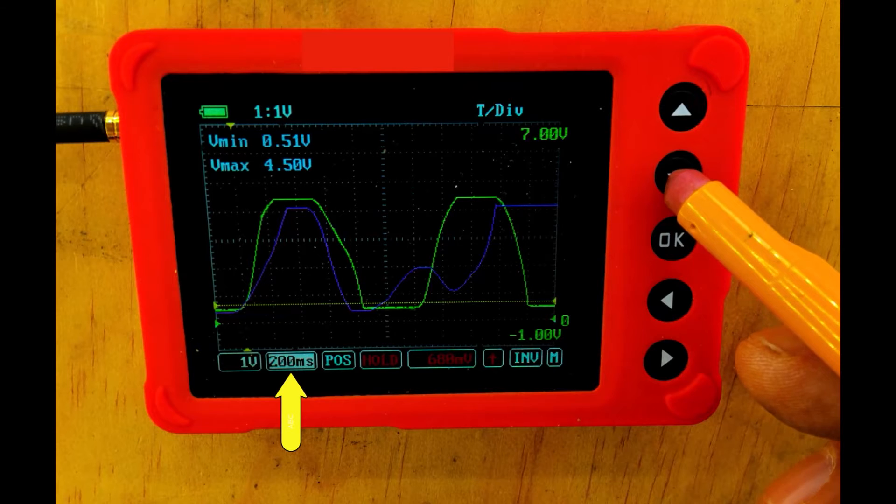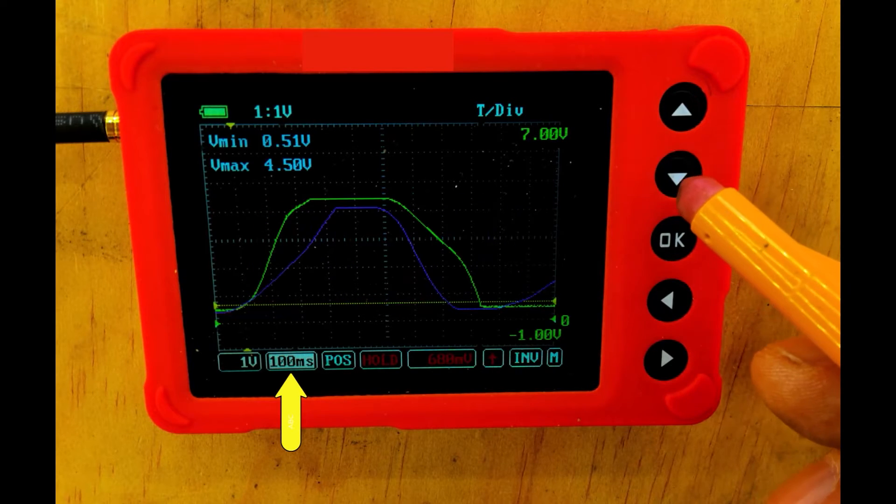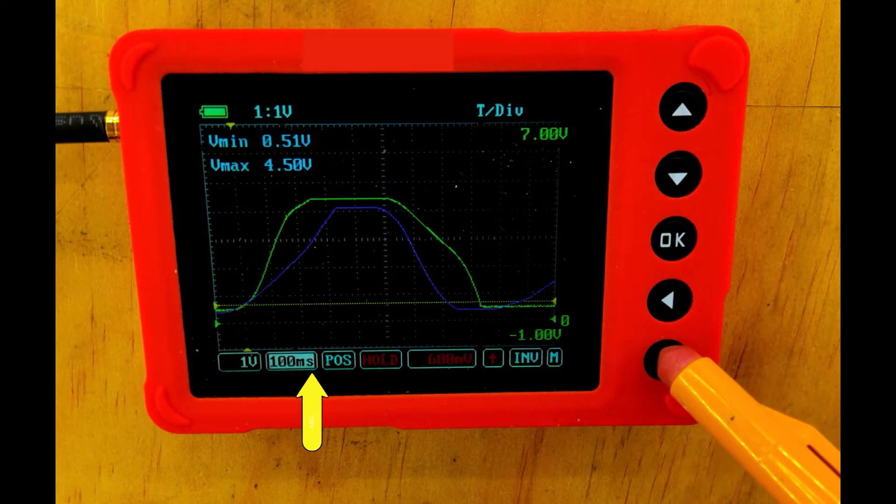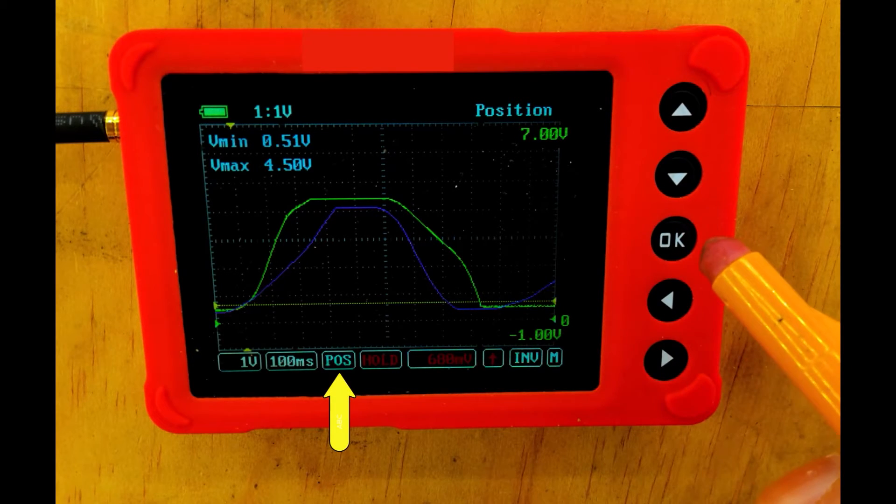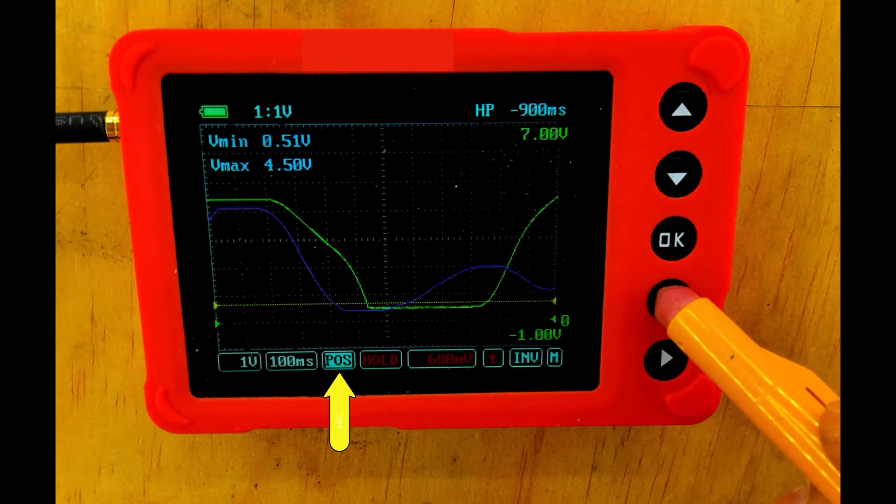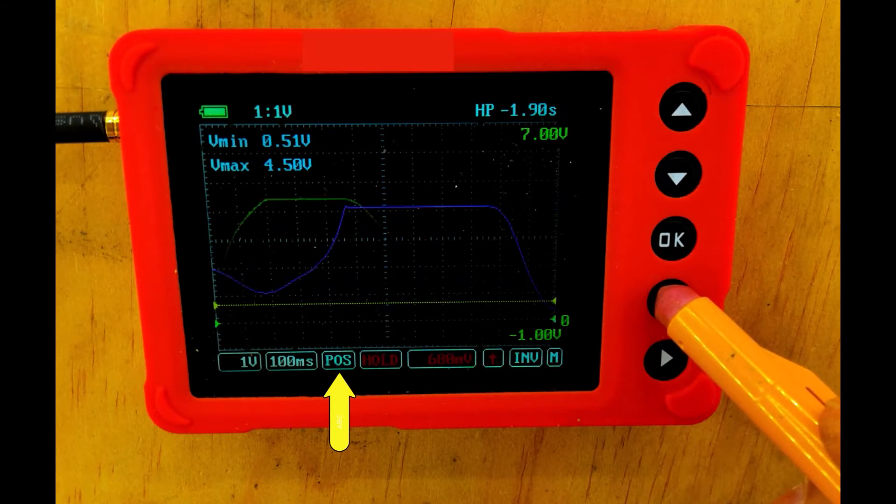If I want to scroll through that and lower that time, but I want to really scroll through each one of these cycles, I'm going to navigate over to my position. Hit OK once till it's flashing, and now I can scroll through each one of these patterns for my comparison.